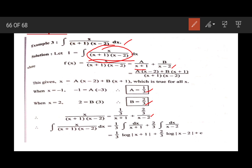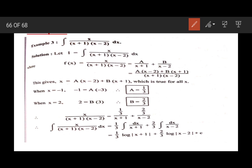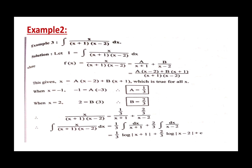Now we have to integrate, which makes the integration very simple and easy. Since 1/3 is a constant term it comes outside the integration: (1/3)∫dx/(x + 1) = (1/3)log|x + 1|. Then 2/3 is a constant term, so it comes outside: (2/3)∫1/(x − 2)dx = (2/3)log|x − 2| + c. Again this is in the form of log m − log n, which can be written as log(m/n).